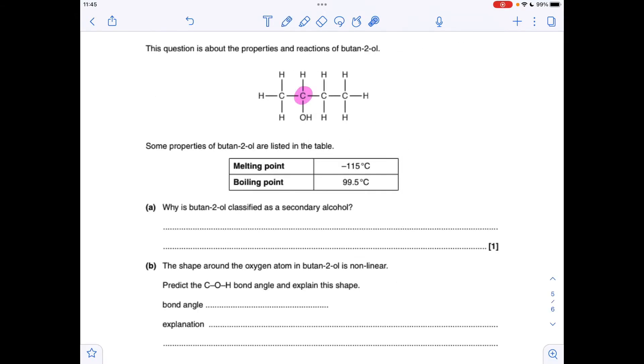Moving on to the next question. Why is butyn-2-ol classified as a secondary alcohol? Well, I've highlighted the carbon with the OH group and you can see it's bonded directly to two other carbons. Alternatively, you could say bonded to two alkyl groups if you wanted to, but two carbon atoms is fine.